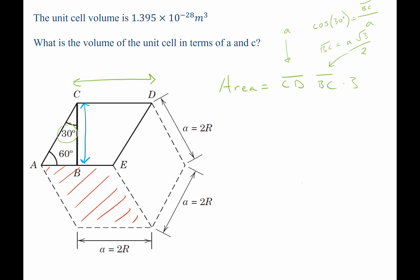Now that we know those lengths, we can go ahead and solve for the area. It's going to be a squared times the square root of three, divided by two, multiplied by three. To get volume, we simply need to multiply by c along the vertical direction. A squared c, square root of three, divided by two, times three.